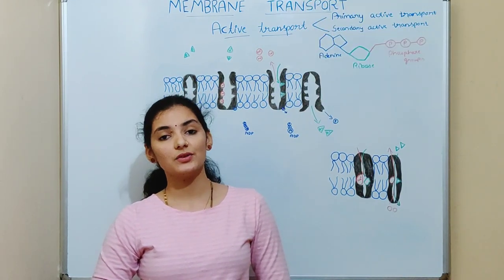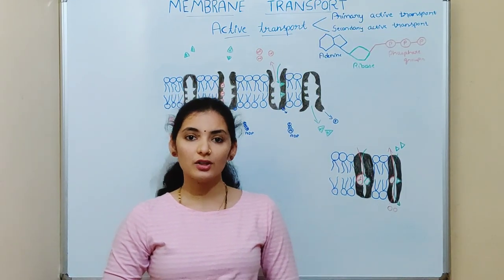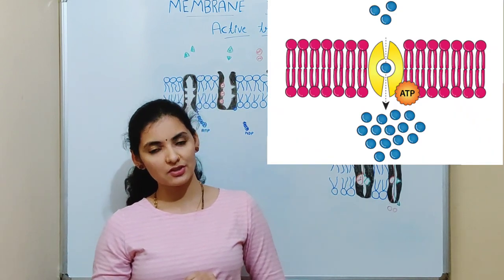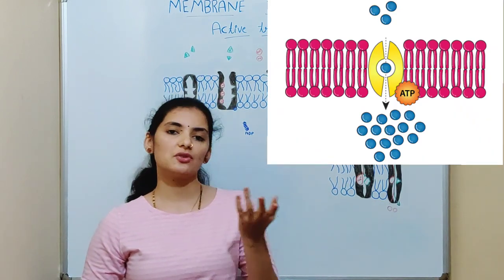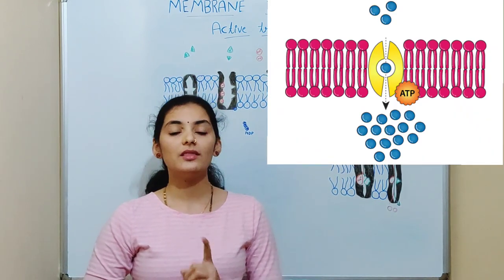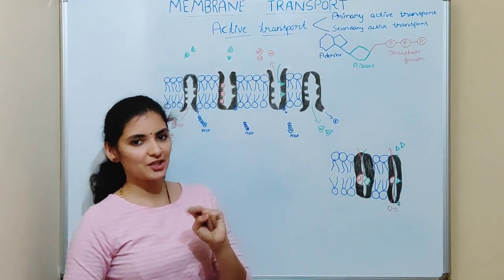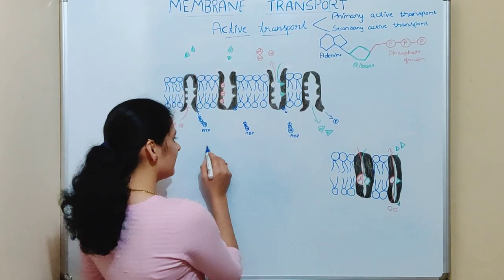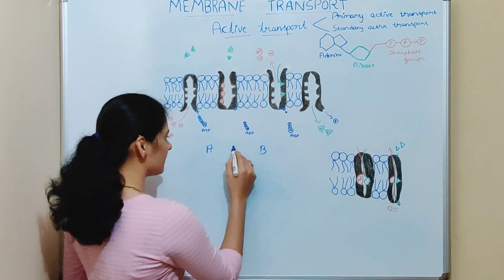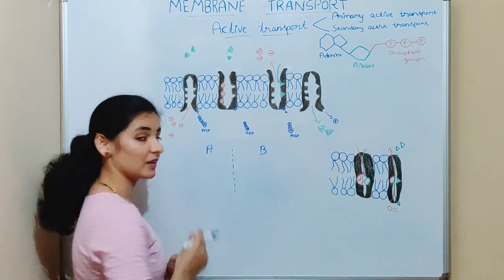But in the case of active transport, it is the movement of molecules from a region of low concentration to a region of high concentration with the expenditure of energy. For example, take two regions A and B which are separated by a plasma membrane.